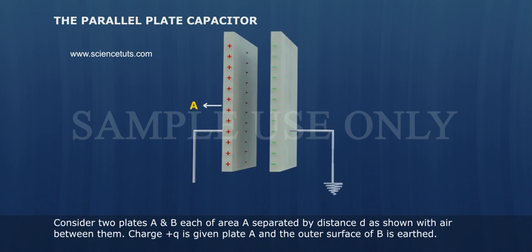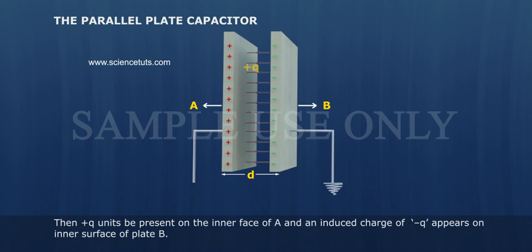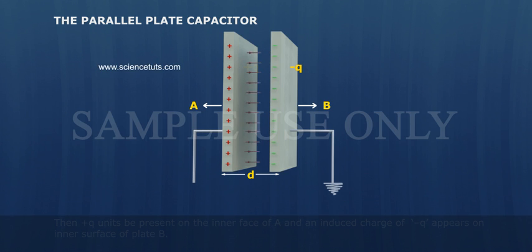Consider two plates A and B each of area A separated by distance d as shown with air between them. Charge positive Q is given to plate A and the outer surface of B is earthed. Then positive Q units will be present on the inner face of A and an induced charge of negative Q appears on the inner surface of plate B.